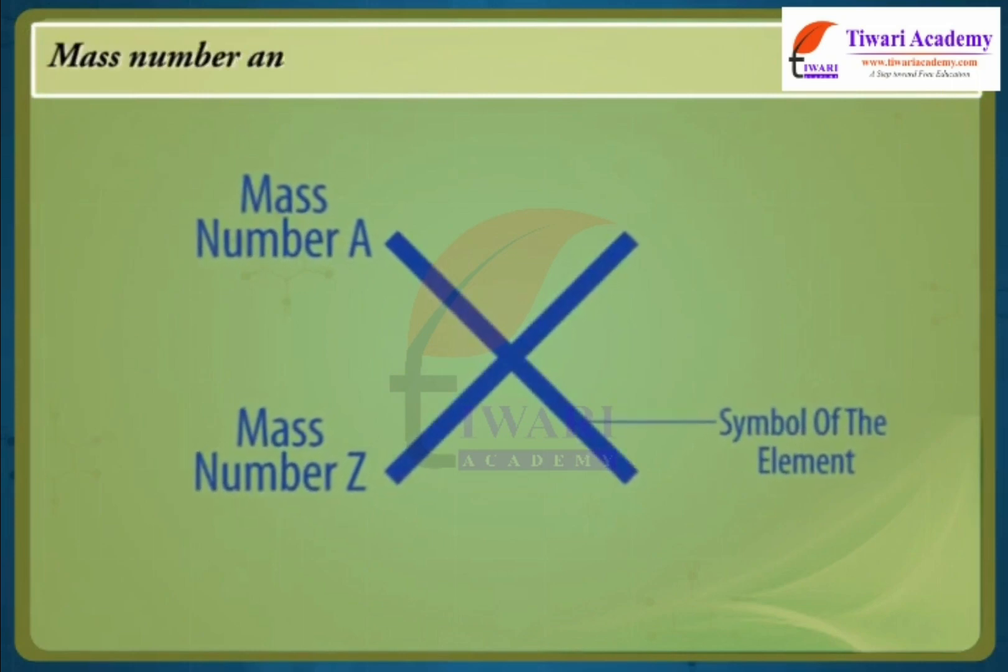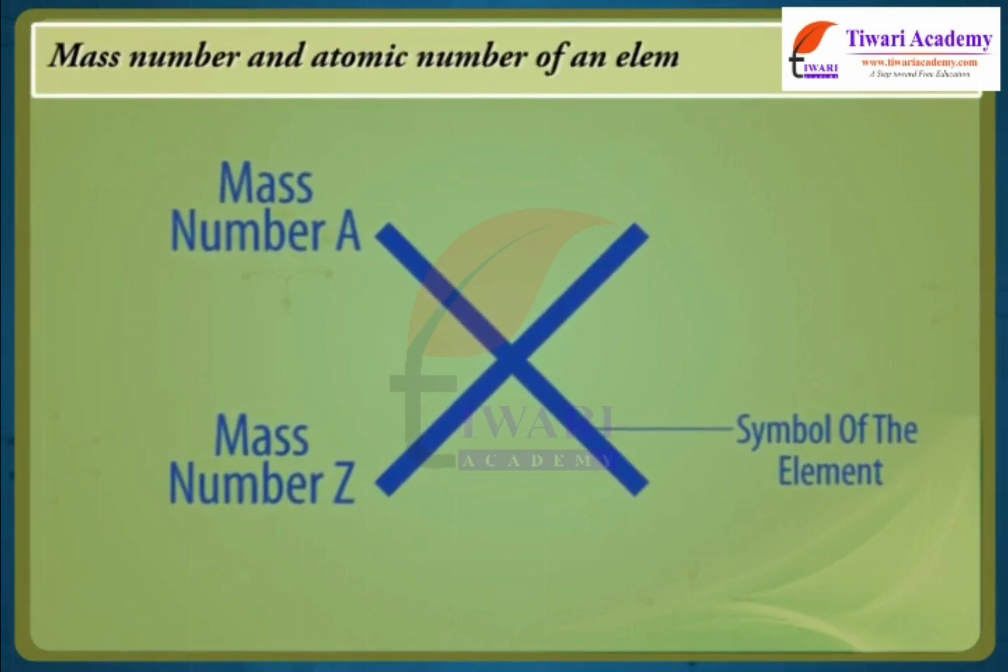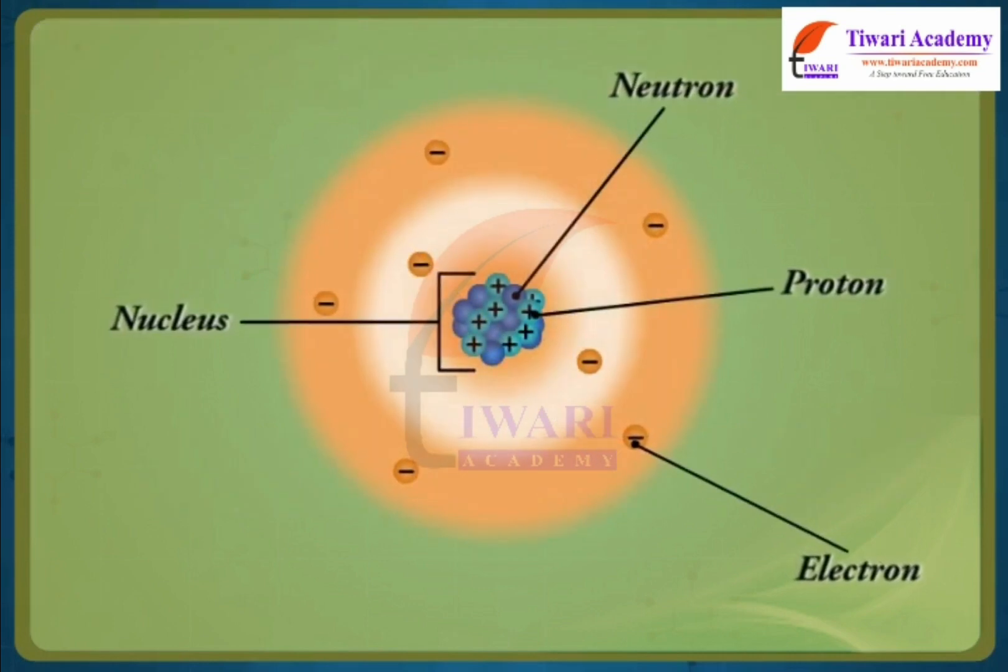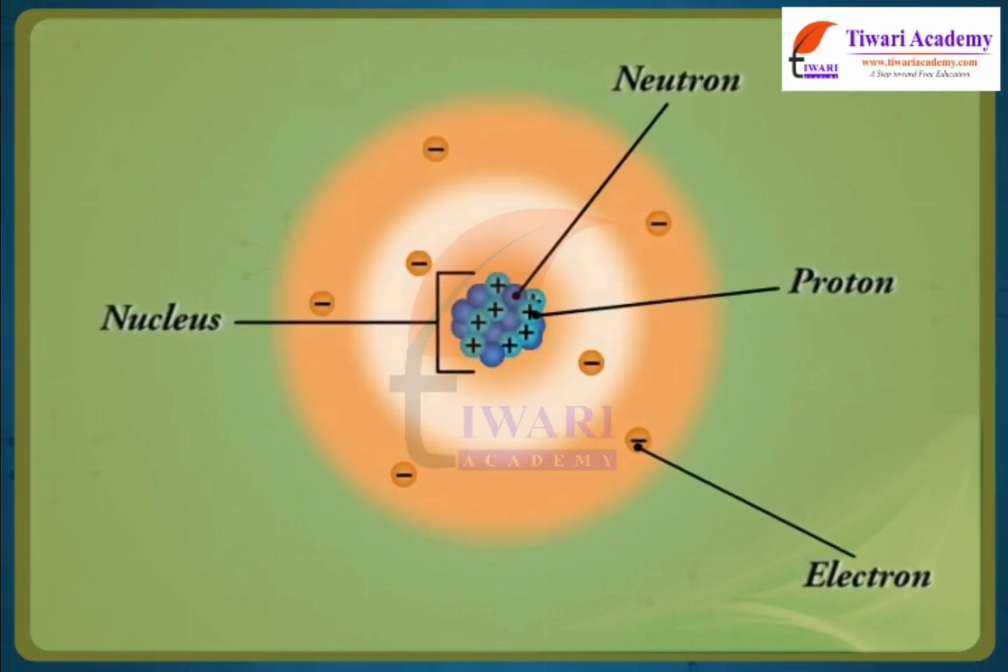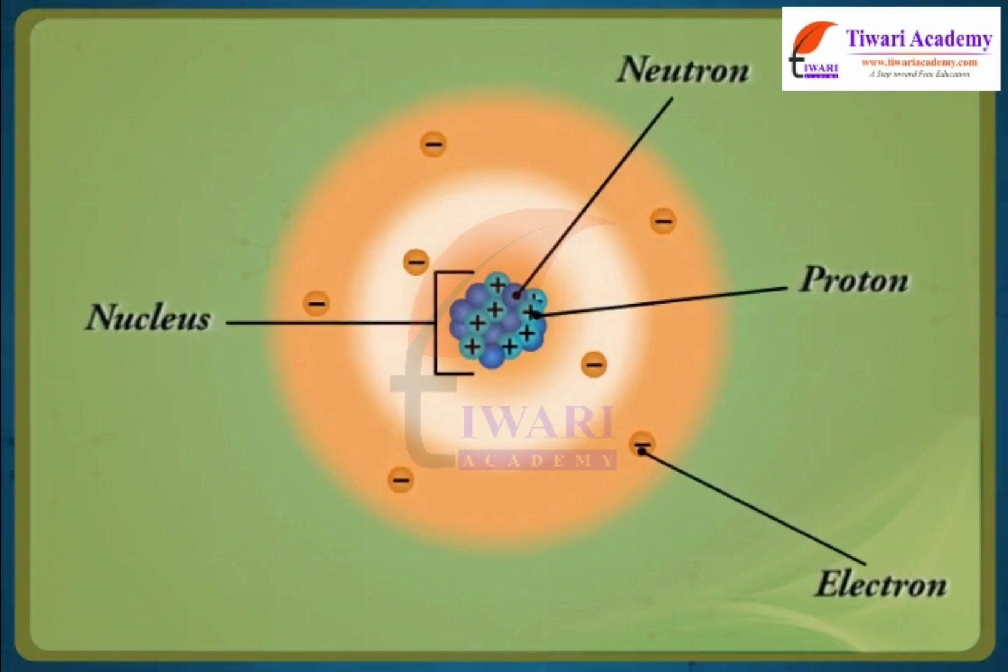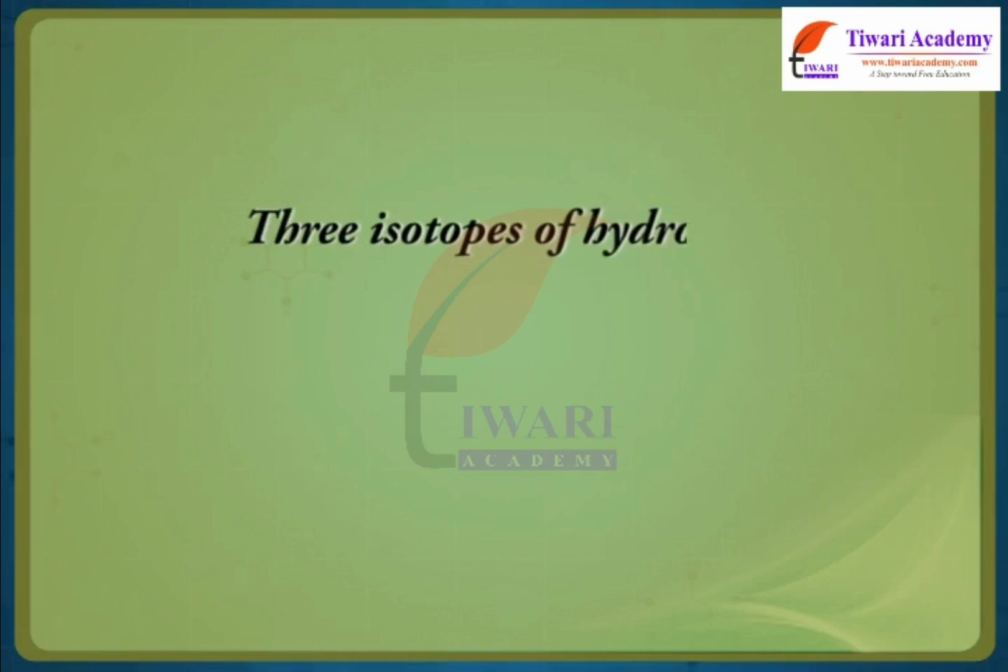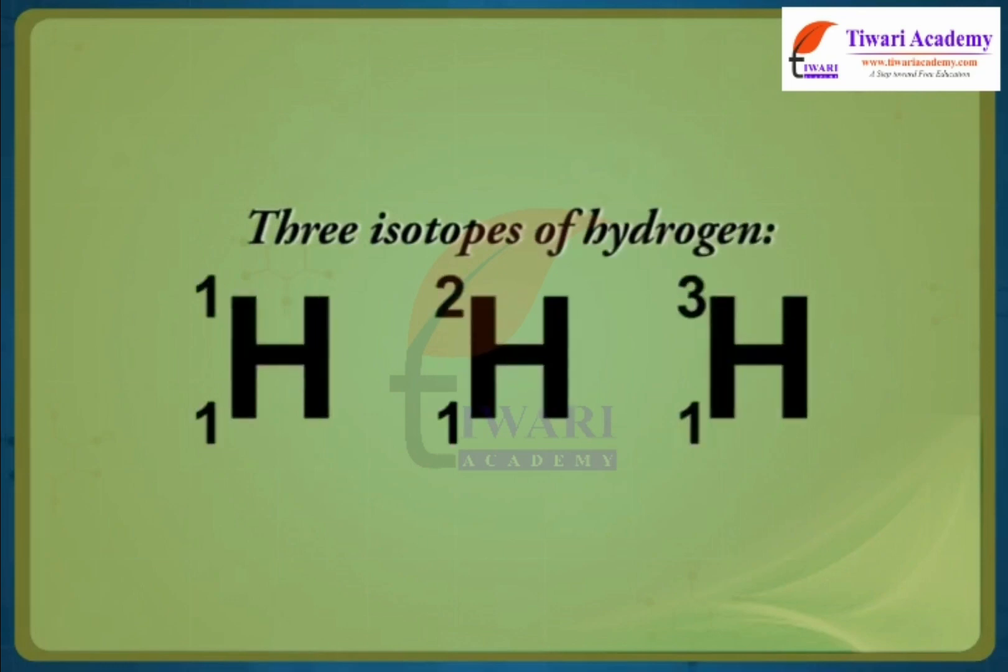Mass number and atomic number of an element are indicated as follows. Isotopes of an element are the atoms of the element with the same atomic number but different mass numbers. The three isotopes of hydrogen can be represented.